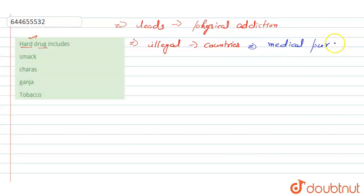Talking about the options here, first option is smack. So what is smack? Smack is the other name of heroin. It is an opioid drug that is made from the acetylation of morphine.